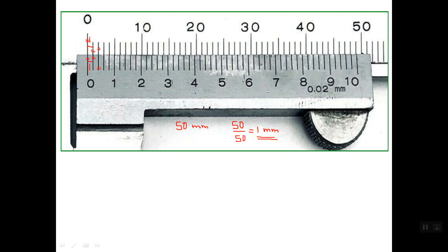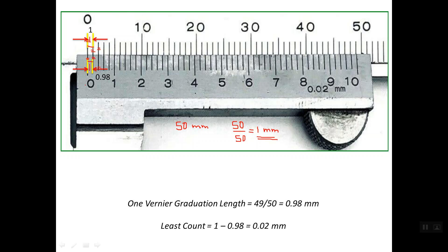In that case, all 50 lines on the Vernier scale would line up with 50 lines on the main scale. If you try to open the caliper, all 50 lines on the Vernier scale would be offset from the main scale lines by the same value — you would not find a single line that lines up uniquely with one line on the main scale. The caliper would not work correctly. The solution is to use 49 mm instead of 50 mm, dividing 49 mm into 50 equal partitions — this is the concept behind Vernier scale design and how we achieve the 0.02 mm least count.